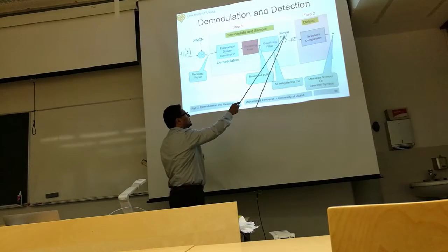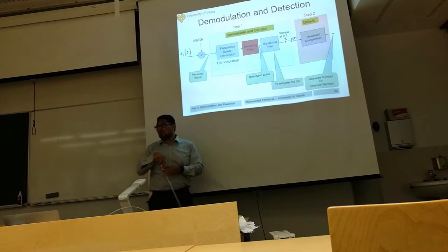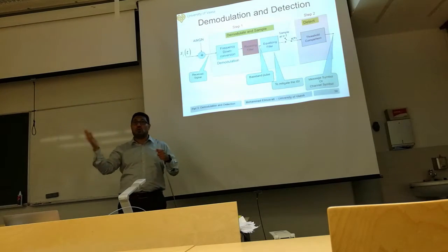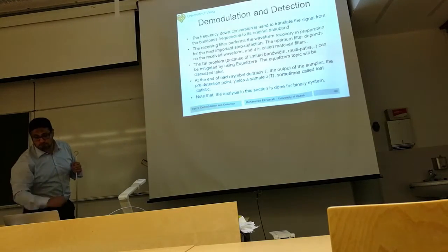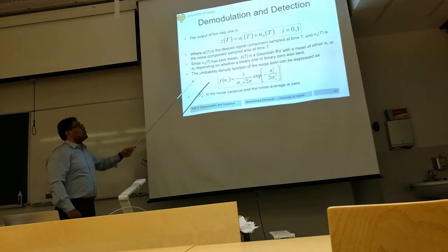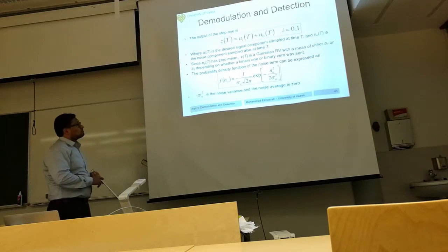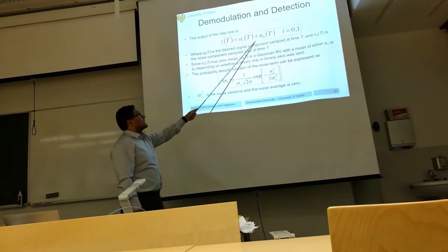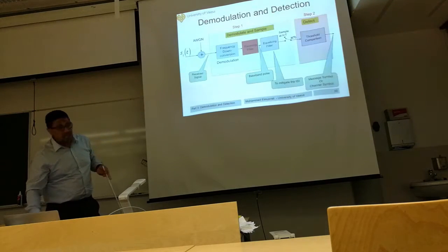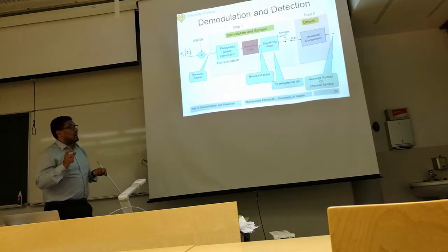We take a sample at the end of the symbol duration. Based on that sample Z(t), we make a threshold comparison. Because we have a binary system, we have either S0 or S1. We need some threshold to decide whether it is S0 or S1. After the demodulation process, we assume the sampled Z(T) equals a_i(t) plus the sampled noise N0(T). The decision is made at the end of the symbol time.